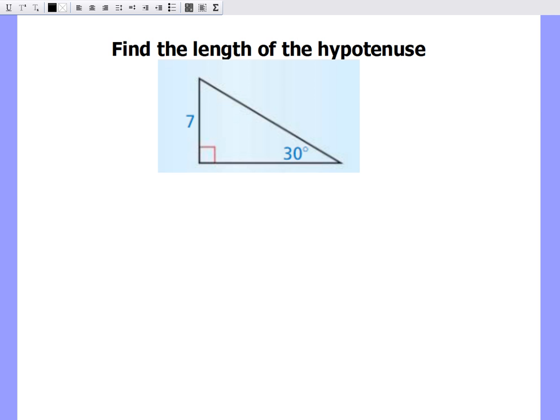So first and foremost, the goal is to find the length of the hypotenuse. So what I noticed by the triangle sum theorem tells me that 180 minus 90 minus 30 means my missing angle is 60 degrees.